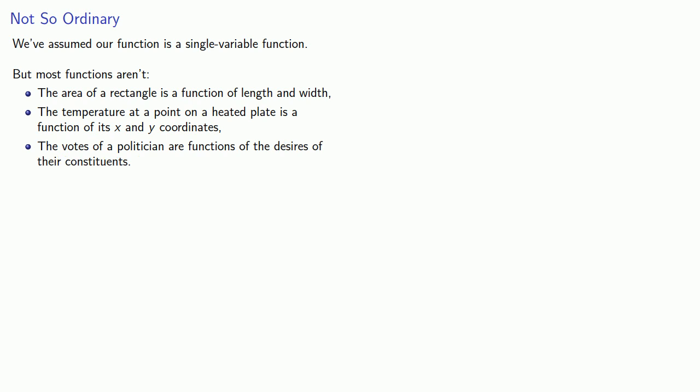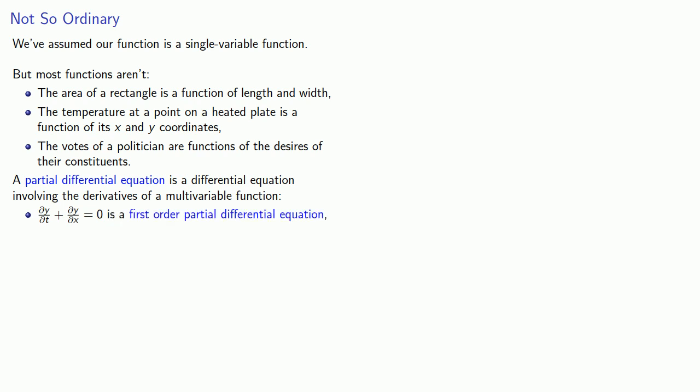And you know from calculus that if you have a multivariable function, you can still talk about its derivatives in the form of a partial derivative. And so a partial differential equation is a differential equation involving the derivatives of a multivariable function. And we name them the same way. So in this differential equation, the highest order derivative is a first partial derivative. And so this is a first order partial differential equation. And in this differential equation, the highest order derivative is a second derivative. So this is a second order partial differential equation.